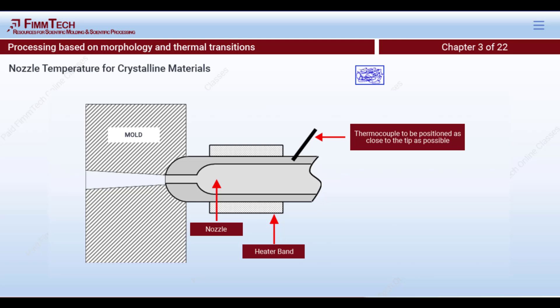On the other hand, if the nozzle temperature is too high, the plastic starts to drool, since crystalline materials have a very sharp melting point and flow easily once molten. To avoid both extremes, it is mandatory to control the nozzle tip temperature as precisely as possible. Placing the thermocouple closer to the nozzle tip — rather than farther back on the nozzle body — provides better control and eliminates freeze-off and drool issues.